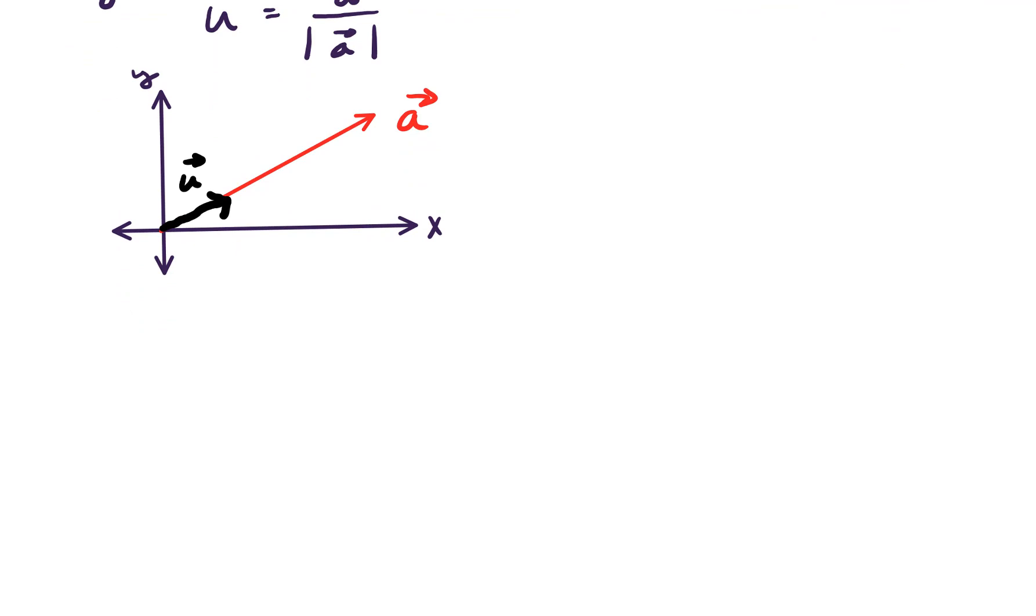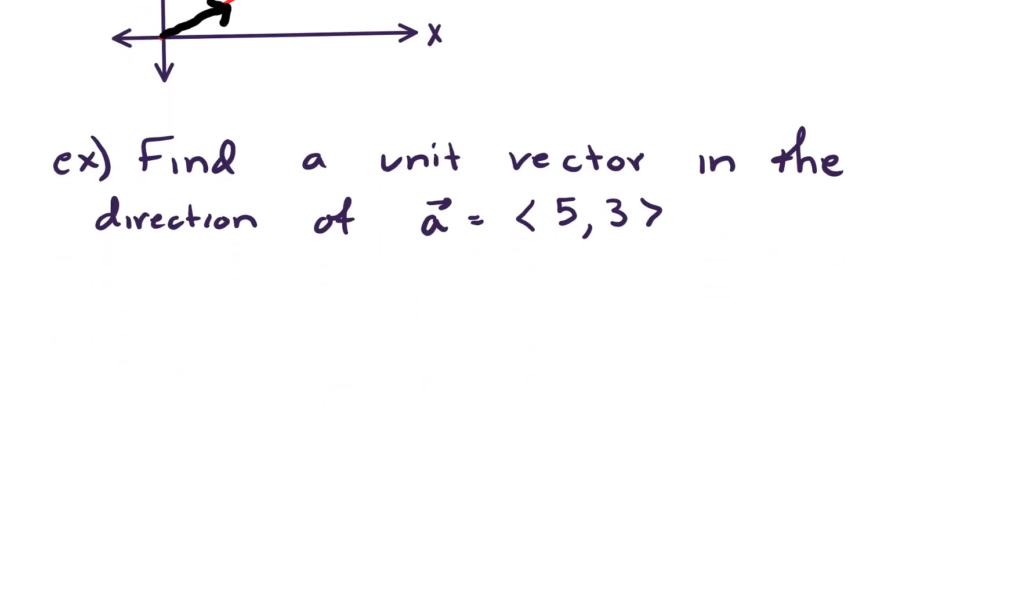So as an example, let's find a unit vector in the direction of a. And we'll say a is the vector over 5, up 3. So, what our calculations tell us we should do, it says we should take, find a unit vector by taking a divided by the magnitude of a. Well, that's easy enough to do.